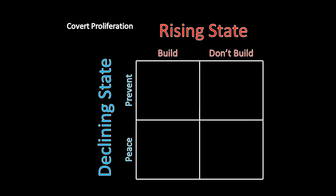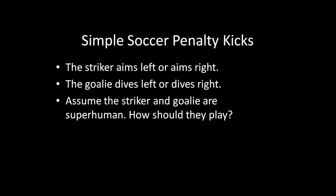Rather than solving this covert proliferation game directly — we're going to do that in the next lecture — here I just want to introduce the idea of guessing games. To do that, we're going to look at soccer penalty kicks, a very simplified version of this. Suppose a striker can either aim left or right, and the goalie can either dive left or right. As with the covert proliferation decision, this is essentially a simultaneous move game. The goalie, despite the fact that he or she may dive after the striker has kicked, in practice the ball is kicked so fast that the goalie doesn't have any time to base their move off of where the striker is aiming. He or she essentially has to guess ahead of time.